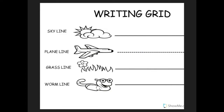N. N is a plain line letter. Put your pencil on the plain line, pull down to the grass line, bounce back up, and make a hump. N, nut, n. O. O is a plain line round letter. Put your pencil on the plain line, fly backwards, curve to the grass line, back up to the plain line. O, octopus, ah.